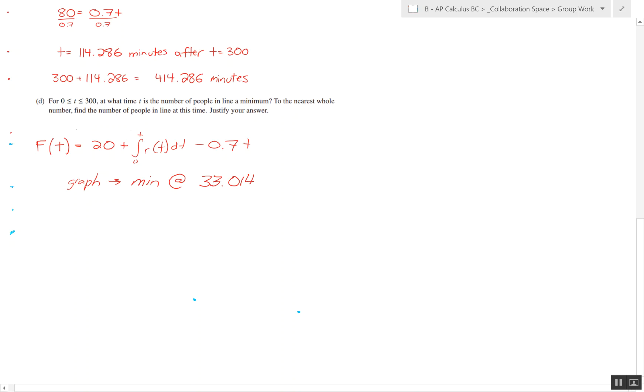So the extremes are zero and 300, and we also have to test at 33.014. If we just plug that into our function f of t, we end up with a value of 20 people at time equals zero, four people at 33.014, and 80 people at time t equals 300. We can observe that our minimum occurs at 33.014 because that's when the value is the least.